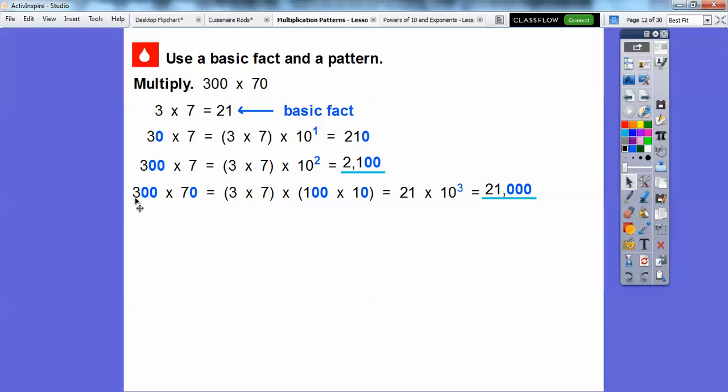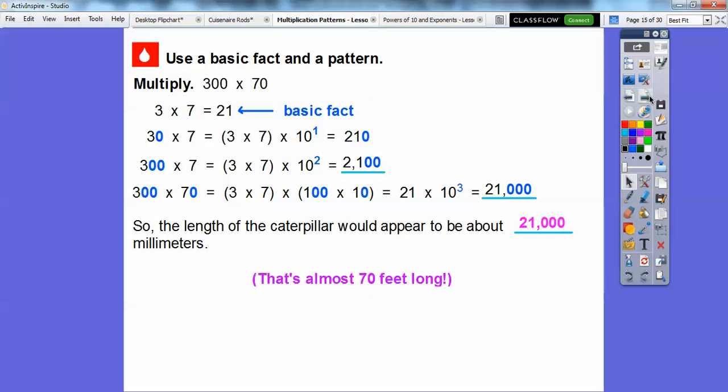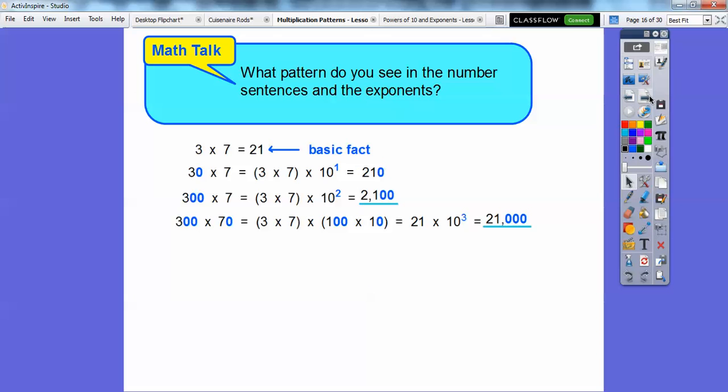All we've got to do is multiply 3 times 7 is 21 and then add these three 0s right here. So 21 with three 0s is 21,000. So the length of the caterpillar would appear to be about 21,000 millimeters. And how big is that? Well, that's almost 70 feet long. We'll talk more about that in a second here. So what pattern did we see in the number sentence and the exponents?